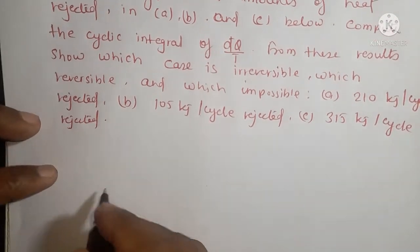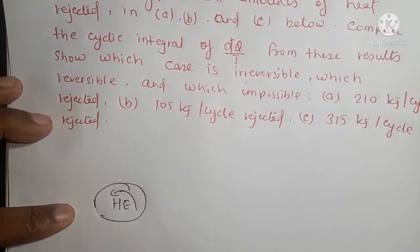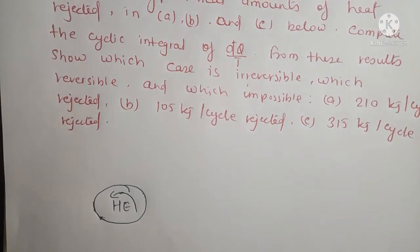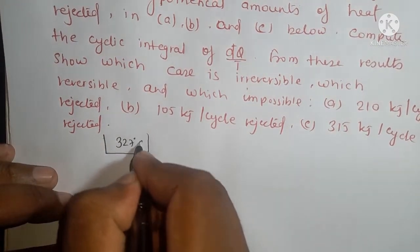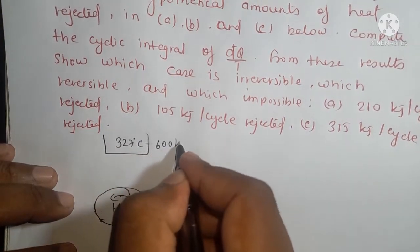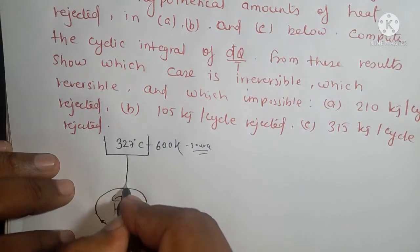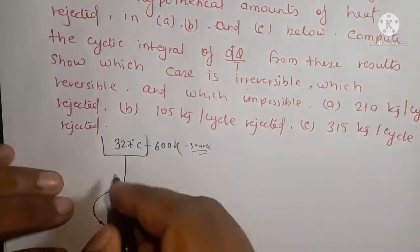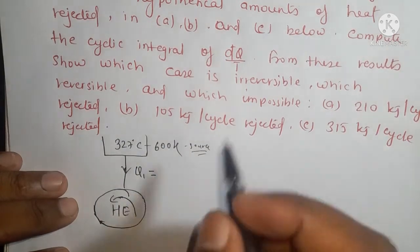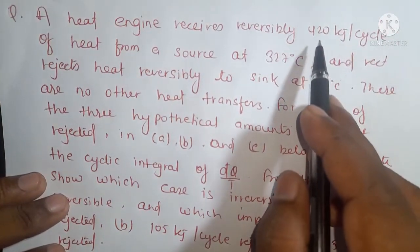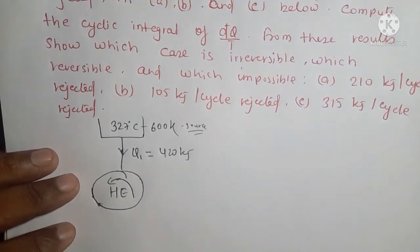We are talking about a heat engine. This is the heat engine, and this is the source which is at temperature 327 degrees Celsius — converting to Kelvin that is 600 Kelvin. The heat engine receives 420 kJ per cycle from the source.